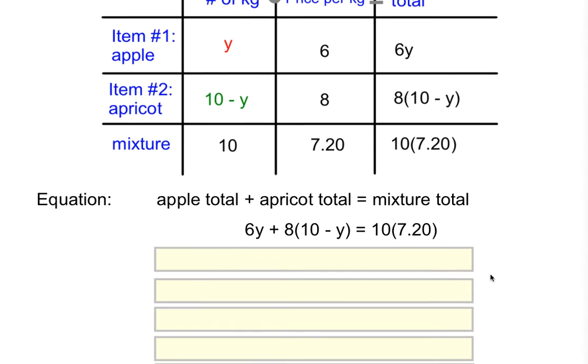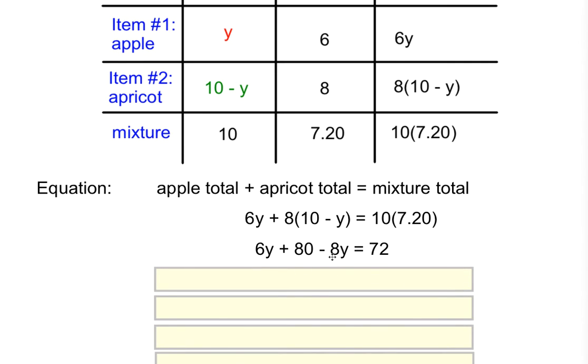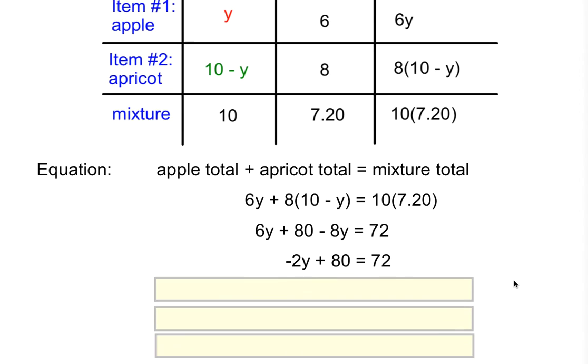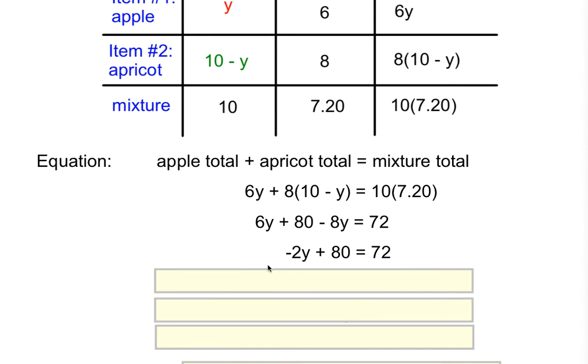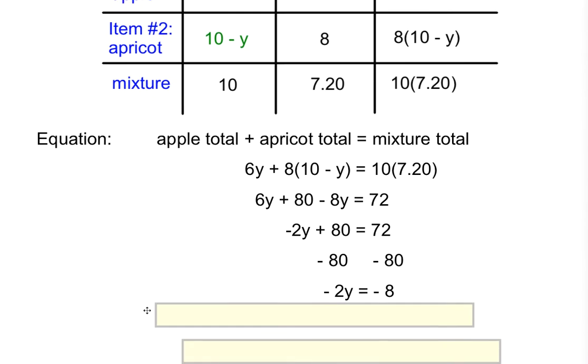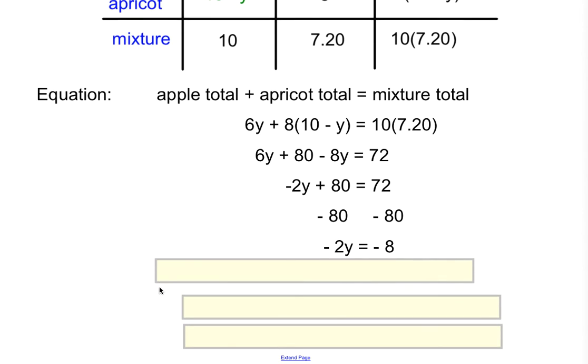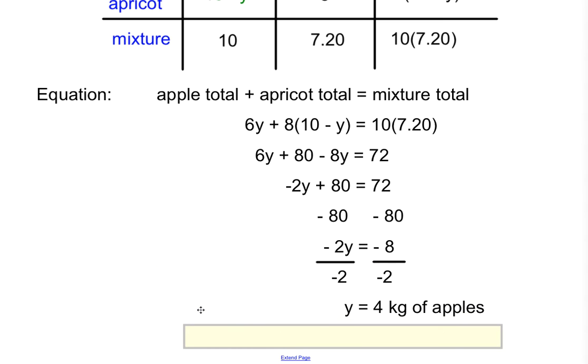Use distributive property to distribute the 8. Simplify the right side and just multiply. Combine your like terms, 6Y and negative 8Y. Try to figure out how to isolate negative 2Y by itself. Subtract 80 on both sides of the equation. Now try to figure out how we're going to isolate Y. Divide by negative 2. And the value of Y is 4 kilograms of apples.